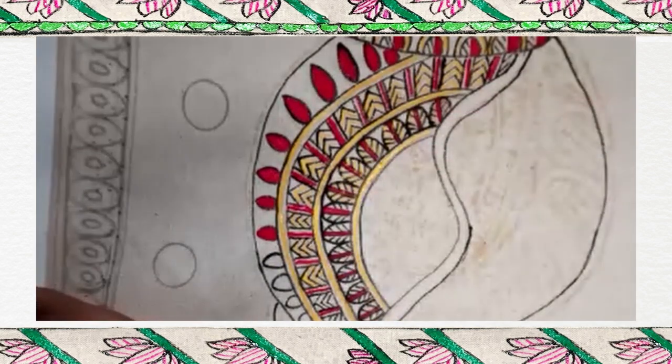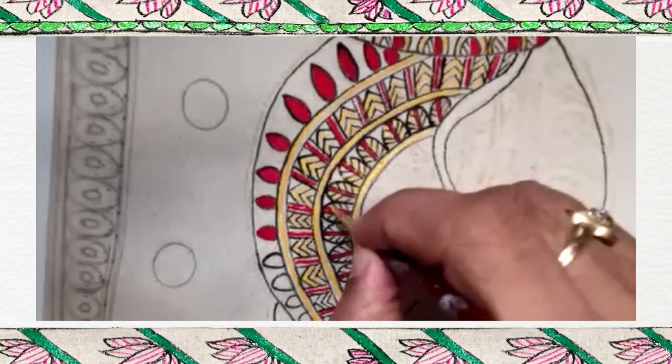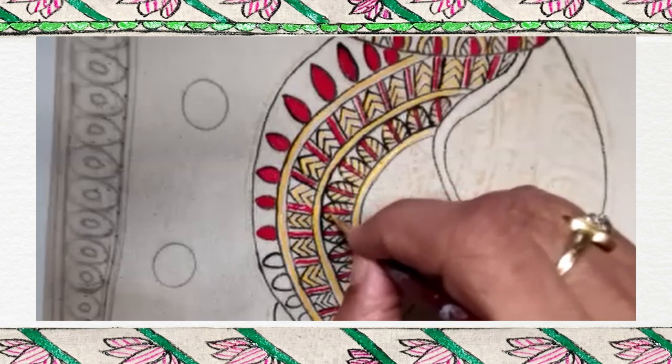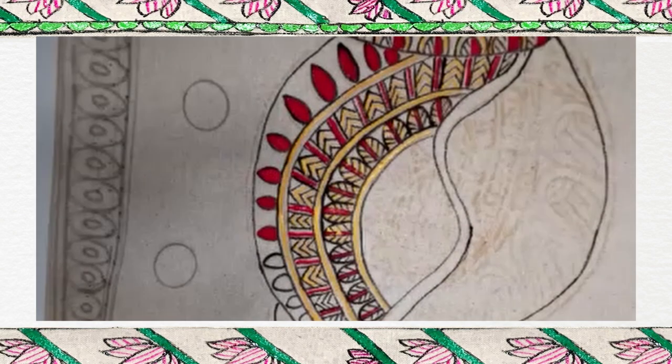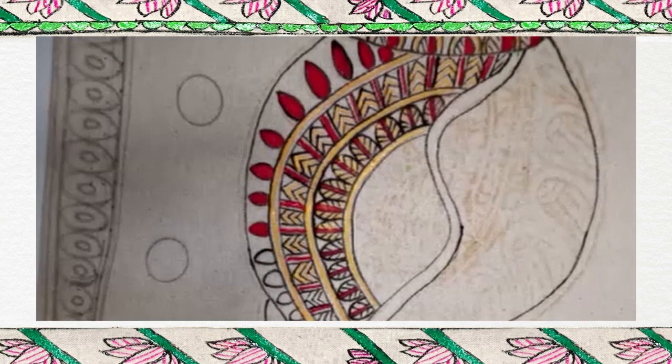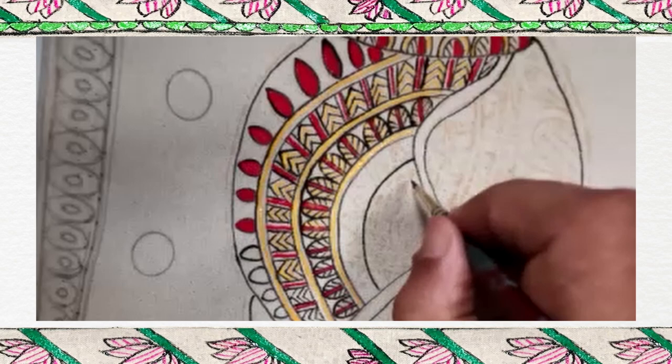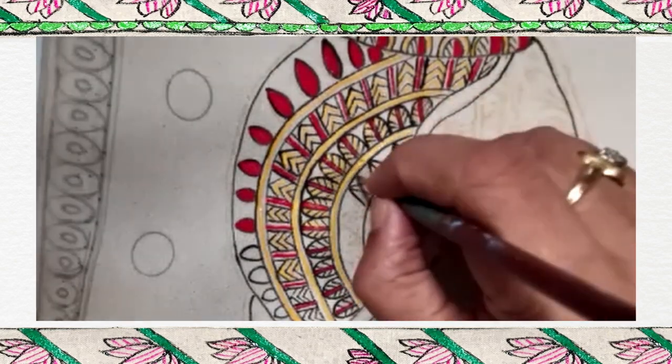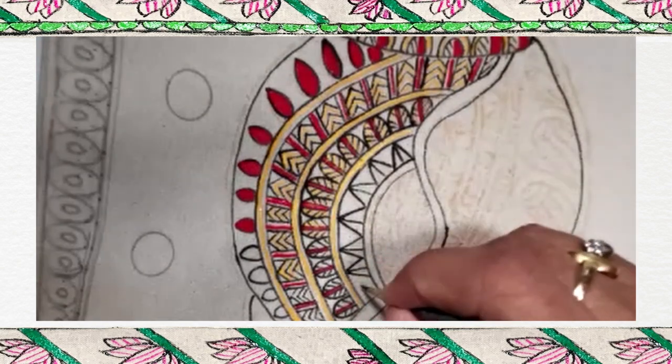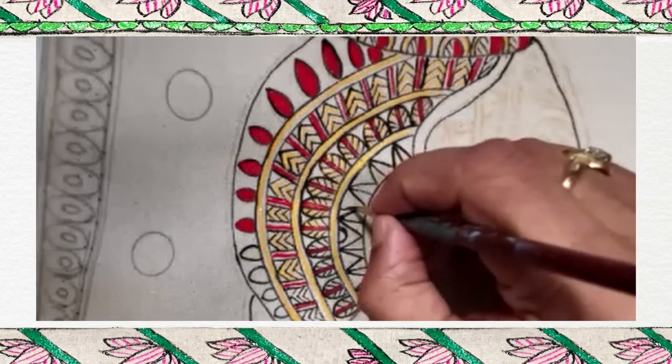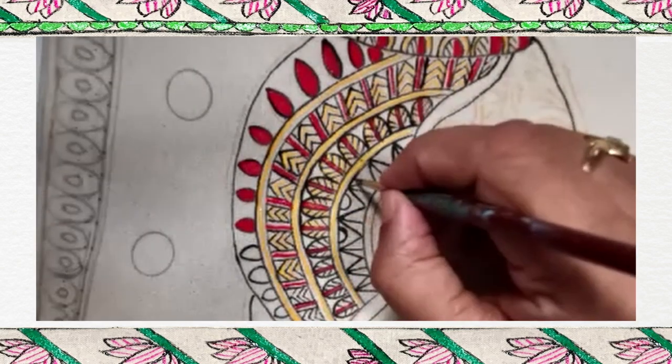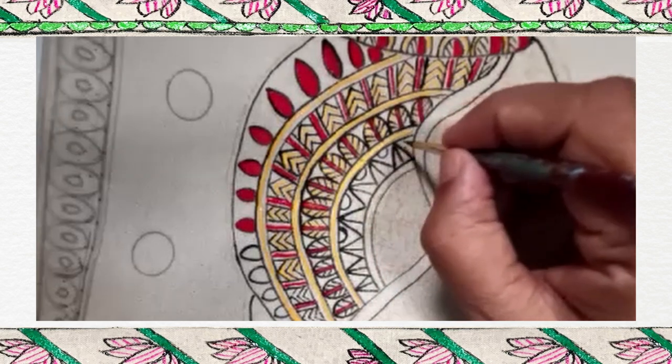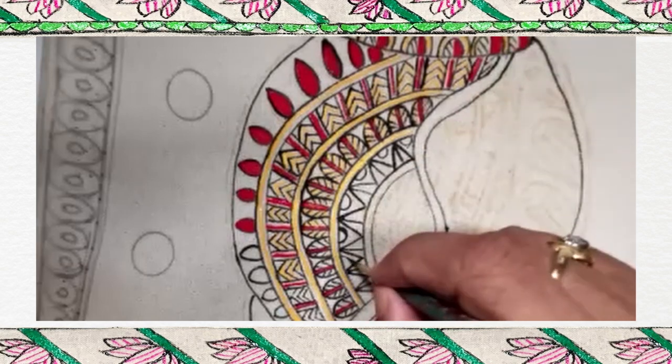It may happen that your paint is absorbed by the cloth and you have to give the second coat. We will take again the black paint. We have used this border design earlier. You remember, in bird painting also we use this design. Almost similar.